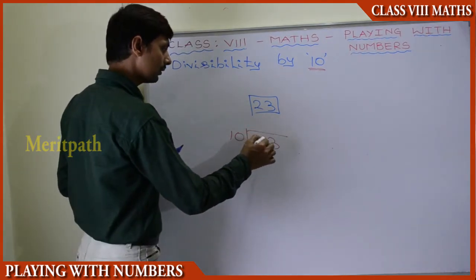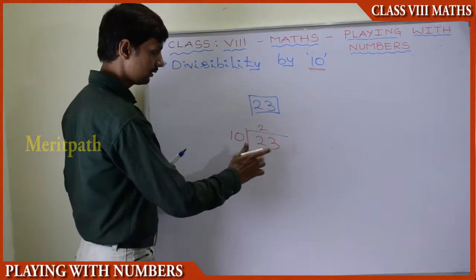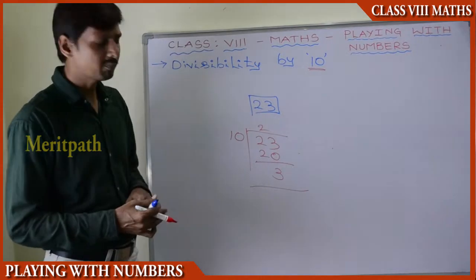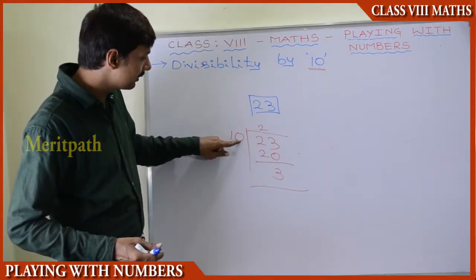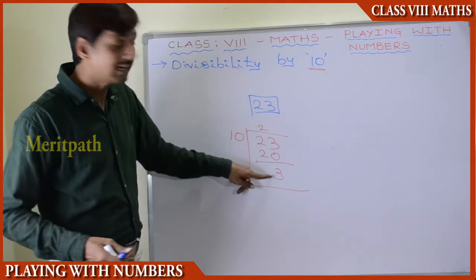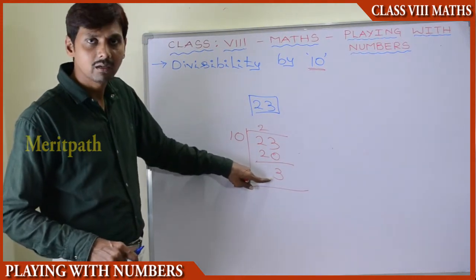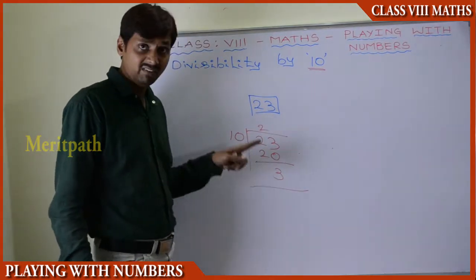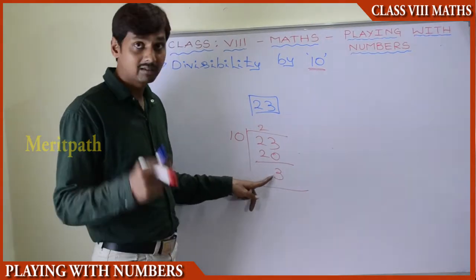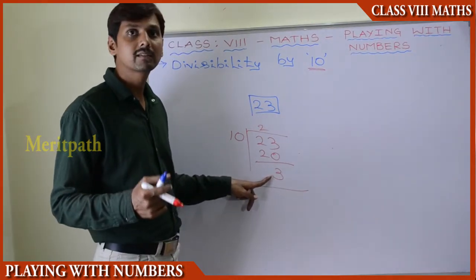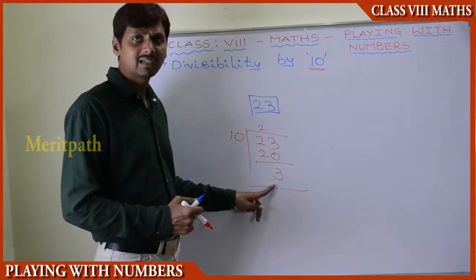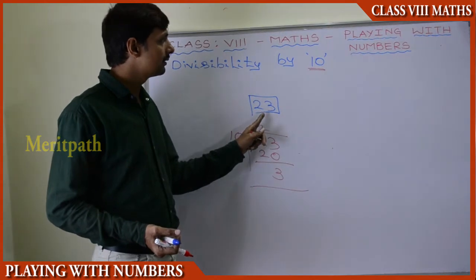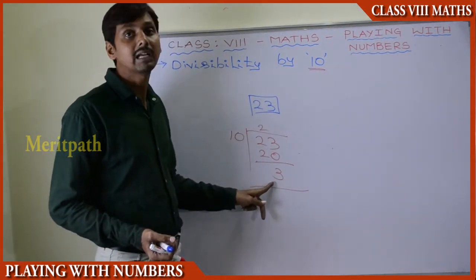2 times 10 is 20, so we get 3 as remainder. It is not possible to divide further, so 3 is the remainder and it is not completely divisible. We get remainder 0 only when a number is completely divisible. Since we got 3 as remainder, 23 is not divisible by 10.